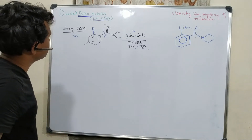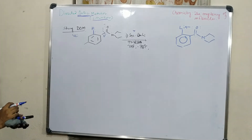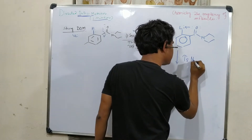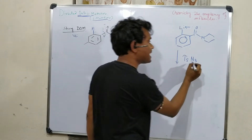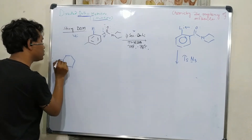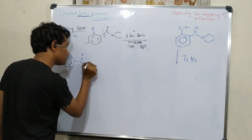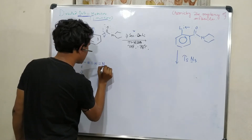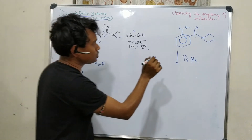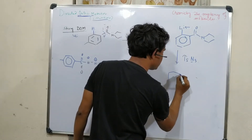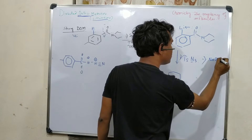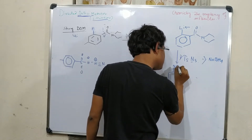This is secondary butyllithium in THF. After that, it will be reacted with tosyl azide — p-toluenesulfonic acid azide. Azides are good electrophiles here. The tosyl azide is attached with this reagent. First step: tosyl azide. Second: sodium borohydride. The ultimate product is an amine.